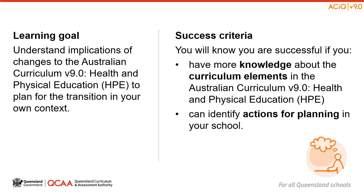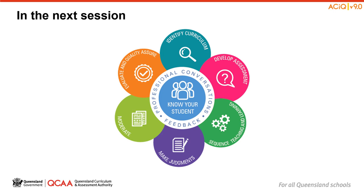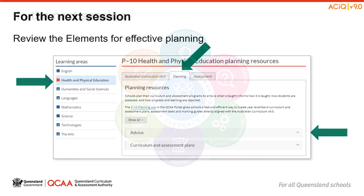As the session comes to a close, let us reflect on our learning goal and success criteria. We have built our knowledge about Australian Curriculum Version 9 and identified some actions for planning in our particular school context. That concludes the second session and our discussion on the Curriculum Elements section. In the final session of our series on Familiarisation and Planning, we will be discussing how to plan with the Australian Curriculum Version 9. On screen, you will see an infographic that is part of our Elements for Effective Planning resource, which you may wish to access prior to the next session.